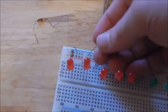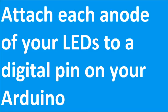What you need to do now is you need to attach each anode of your LEDs to a digital pin on your Arduino. But don't just attach them to any digital pin. The first LED on your board needs to be attached to digital pin 11, then 10, then 9, then 8, then 7, then 6, then 5, then 4, then 3, then 2 for each LED. So that's pretty simple. And then when you've done that, your wiring will be done.